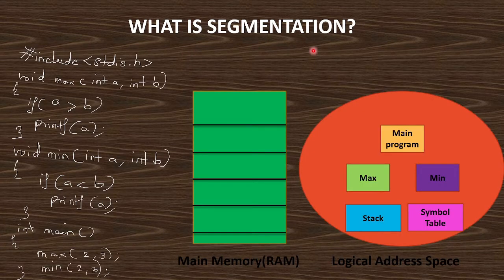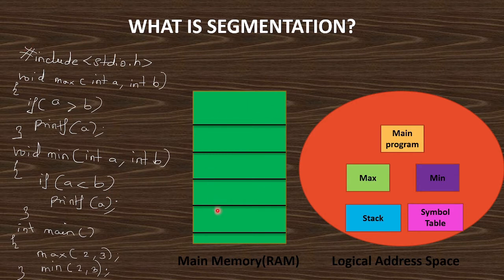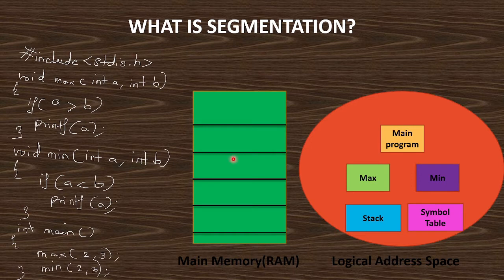Now we will see what segmentation is with an example. Suppose you have written a program inside your editor like Code::Blocks or Turbo C and you want to execute it. To execute this program the CPU needs to execute it. So the program has to go to the CPU, and the CPU will get the program from the main memory — that is from RAM. It will never take data from your hard disk. The program must be loaded from your desktop into the main memory, and from the main memory the CPU takes it for execution. So we have to utilize this main memory efficiently with no wastage of space. That is the main purpose of segmentation.